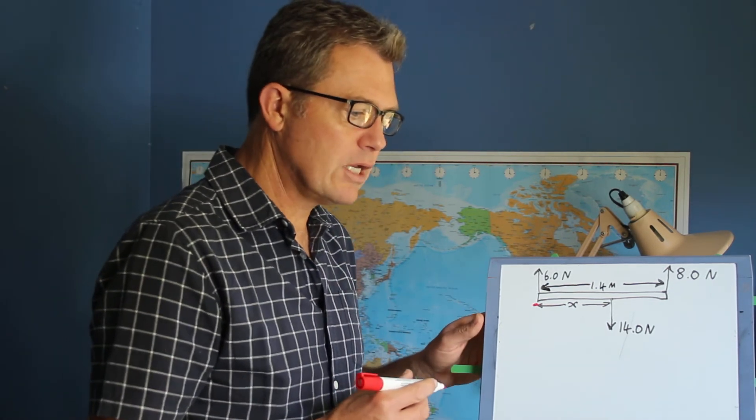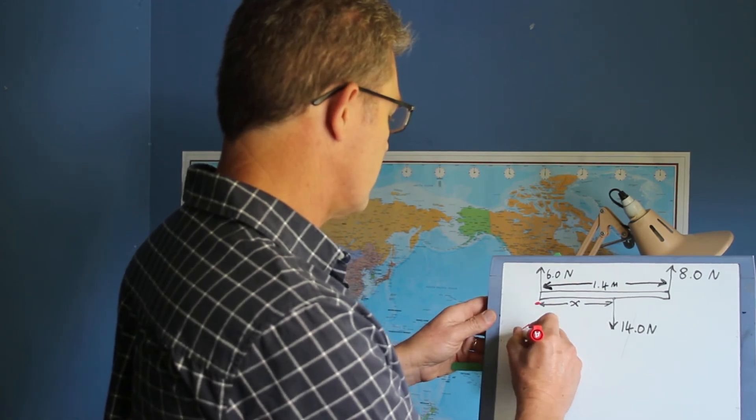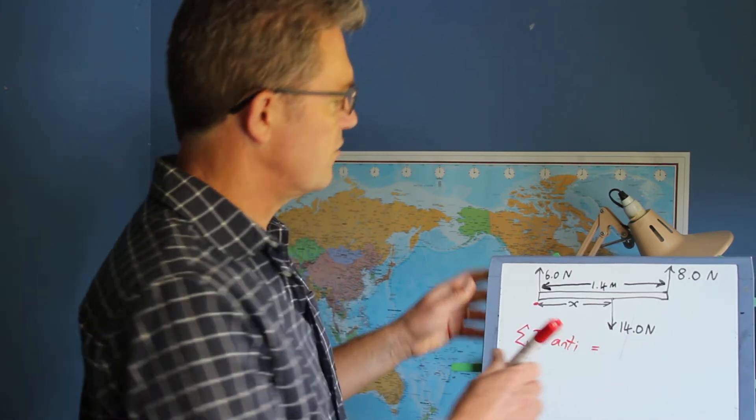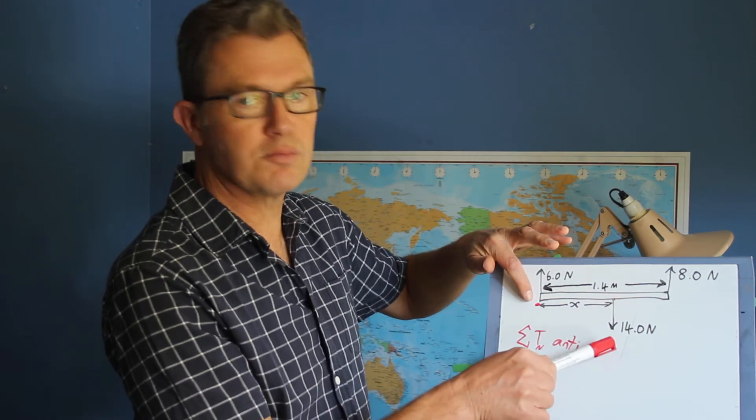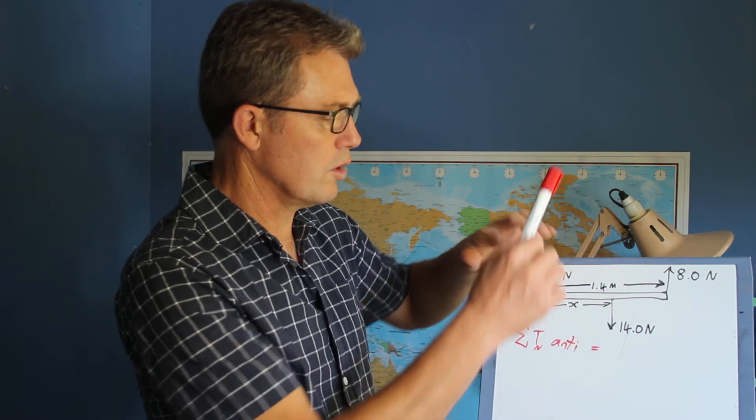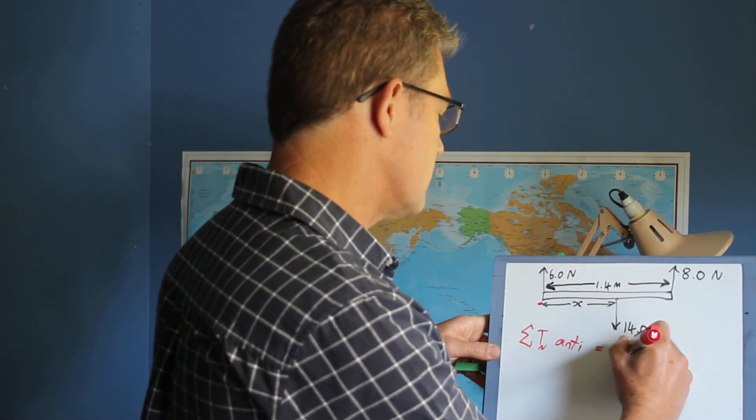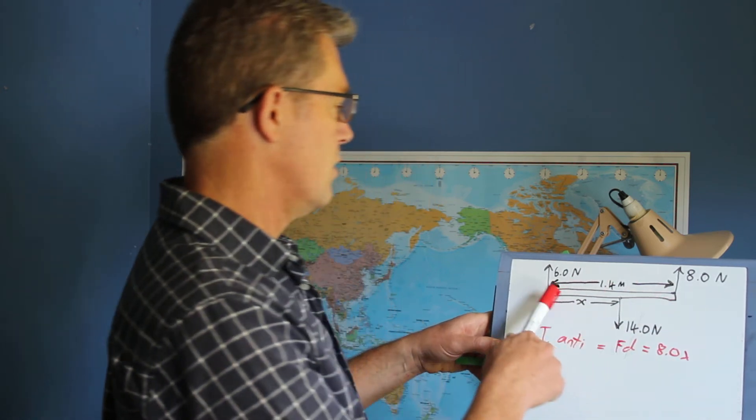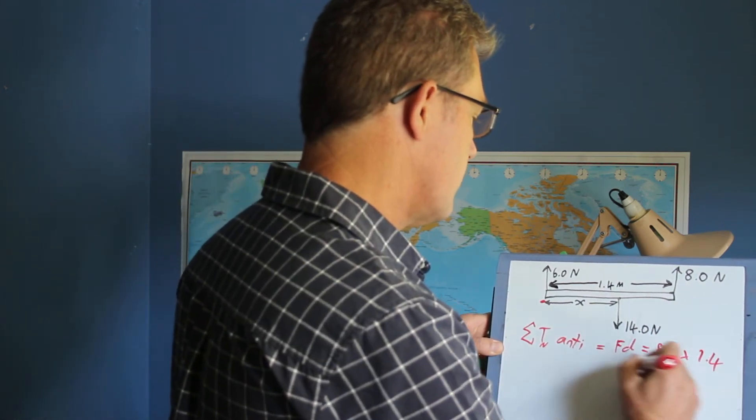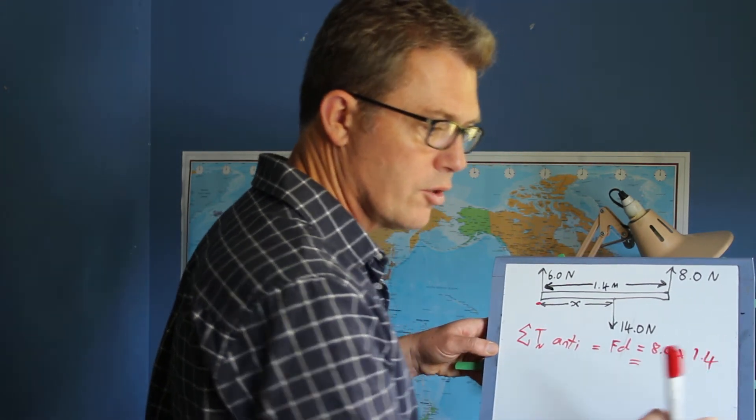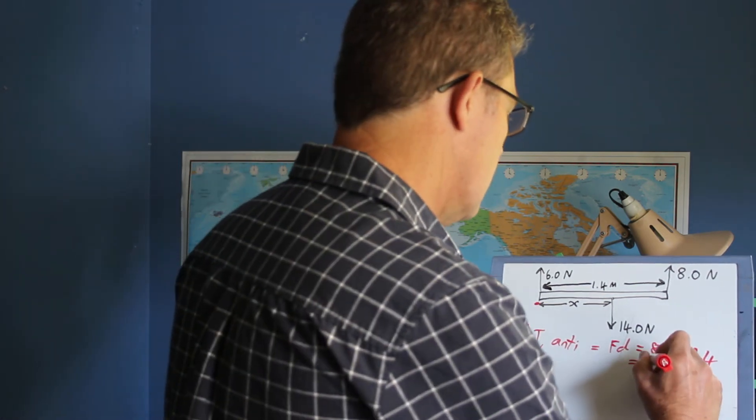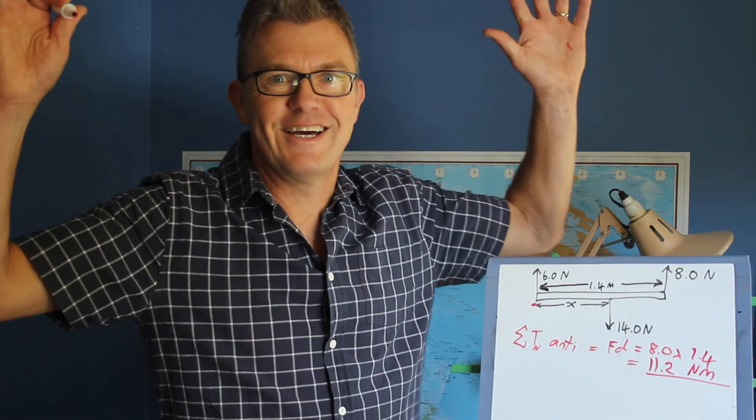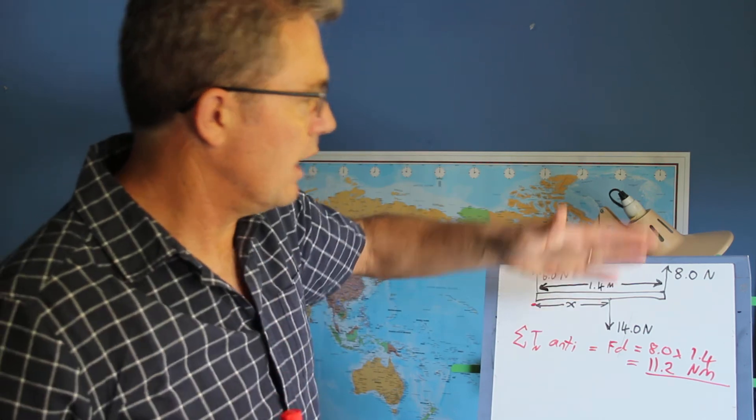So, let's look at the anti-clockwise torques. So, sum of the torques, or moments, anti-clockwise, equals... Around this point, this force is providing a clockwise torque. This force is providing an anti-clockwise torque. So we say it's force times distance, which is equal to 8 times 1.4 meters. And, on a Tuesday, 8 times 1.4 equals 11.2 Newton meters. Hurrah! Well, we haven't done it yet. We've just found the anti-clockwise torques.